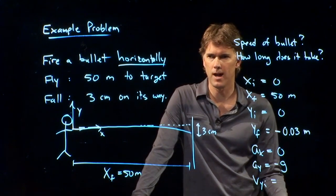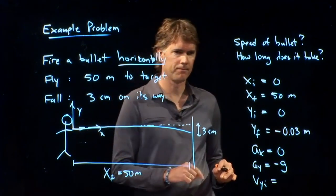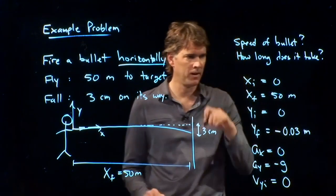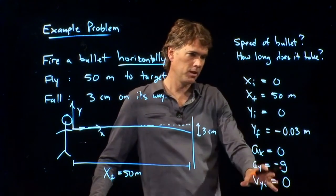Namely, we said that the bullet is fired horizontally, and if it's fired horizontally, what is v_y initial? What does v_y initial have to be if it's fired perfectly horizontally? Zero, right? That's zero.